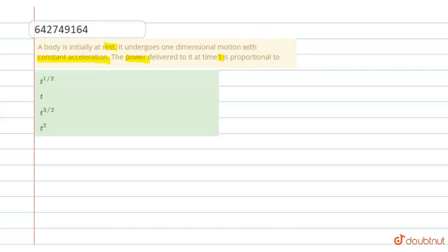So in this question, we have to calculate the power and we know that the body is initially at rest means u is equal to 0 and we have the acceleration is constant.